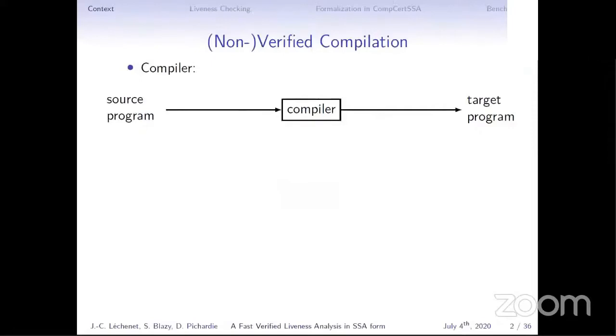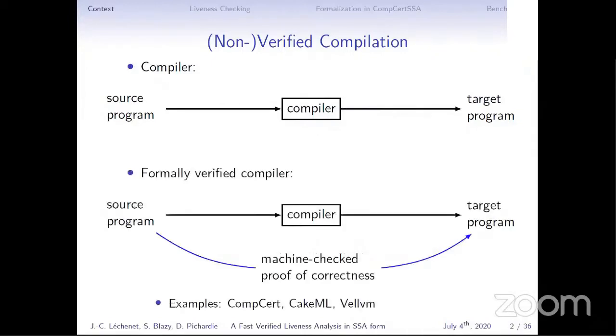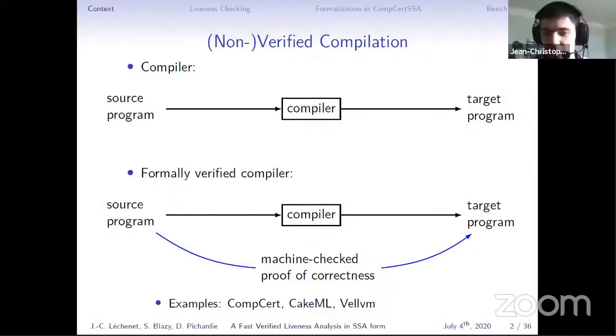Our work is in the context of verified compilation. A compiler is a program that turns a source program into a target program, typically in a low-level language. A formally verified compiler is the same thing except that it comes with a machine-checked proof of correctness, typically in a proof assistant, guaranteeing that the target program has the same behavior as the source program.